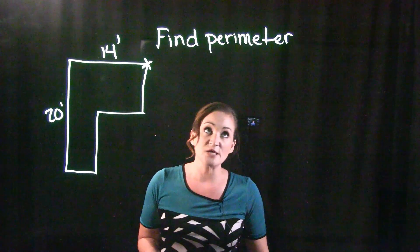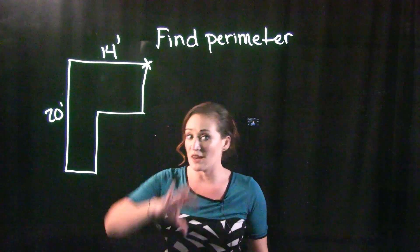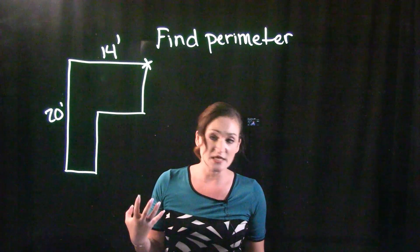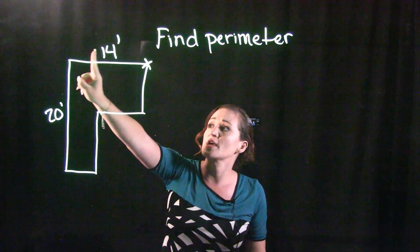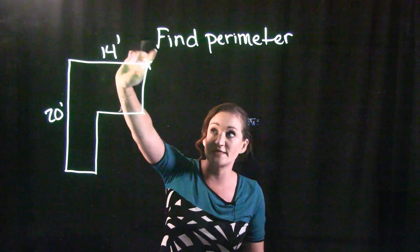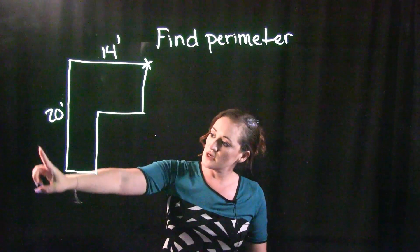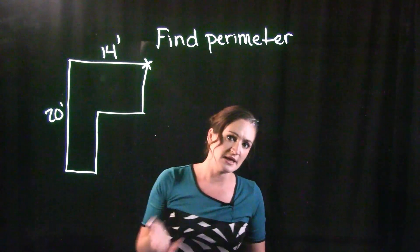One of the most important things when finding the perimeter is that we do know all the values of the lengths of the sides of our figure here. For example, if I start walking this direction over here, I do have this notation that this is 14 feet. When I go down here, that's 20 feet. I don't have anything marked for these other sides here.